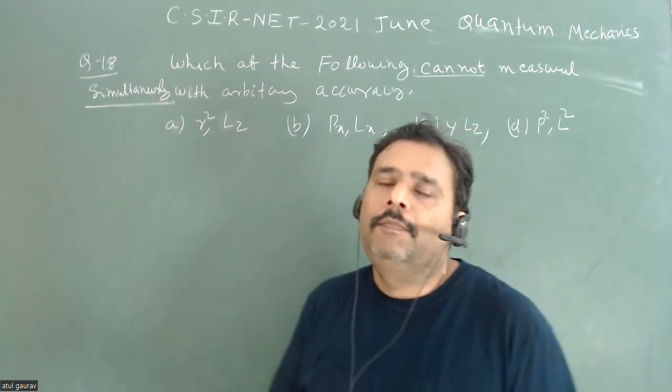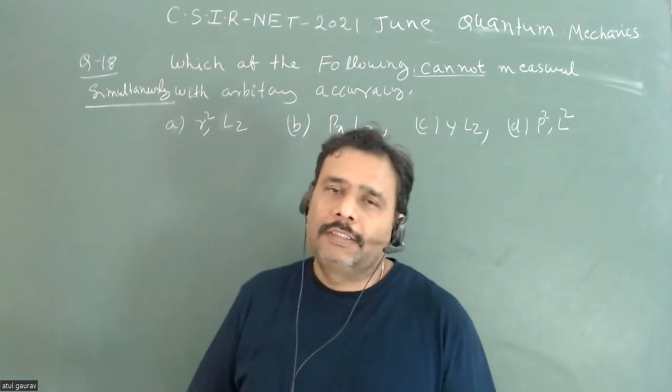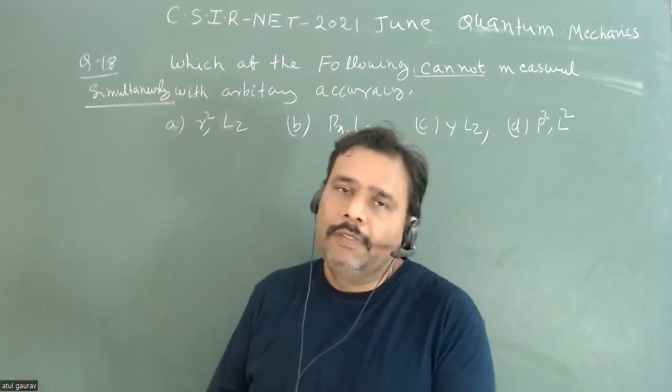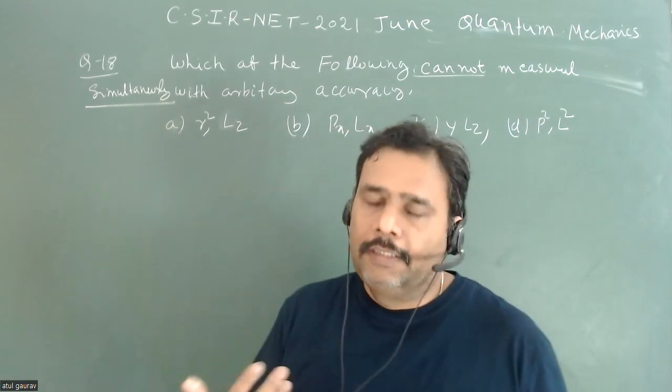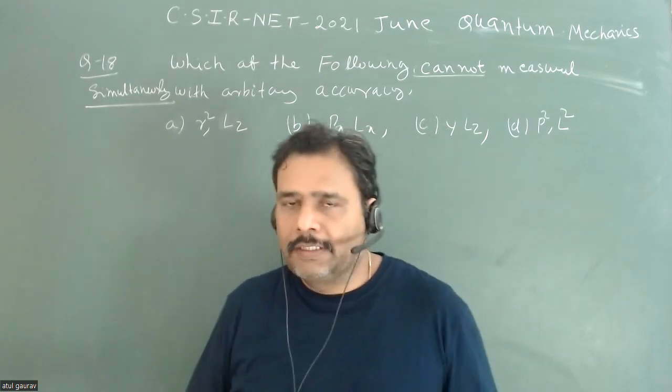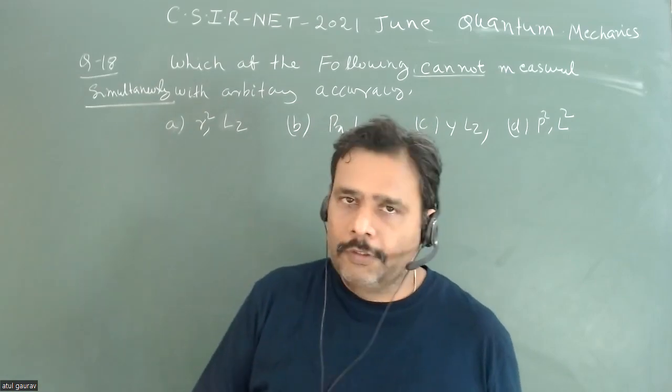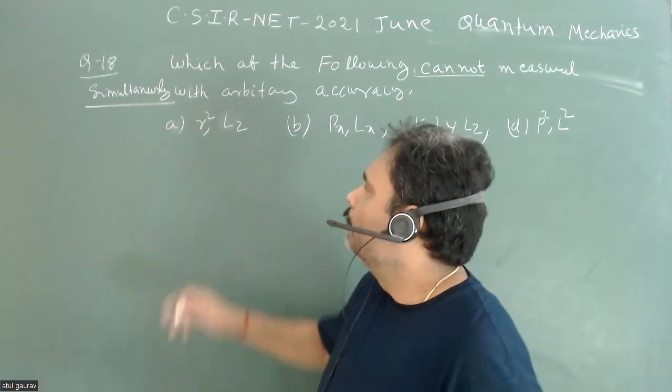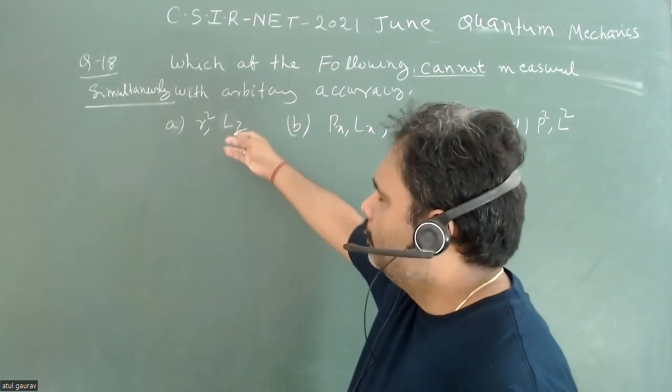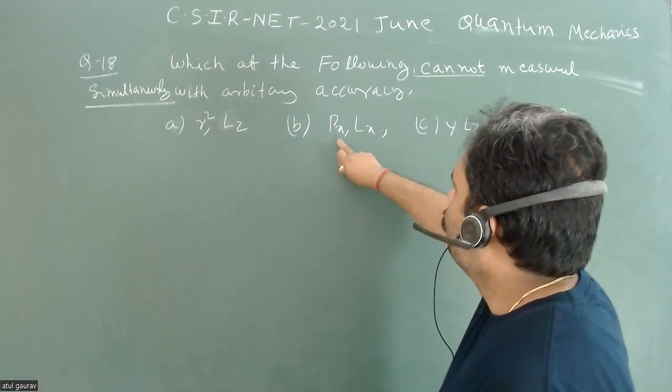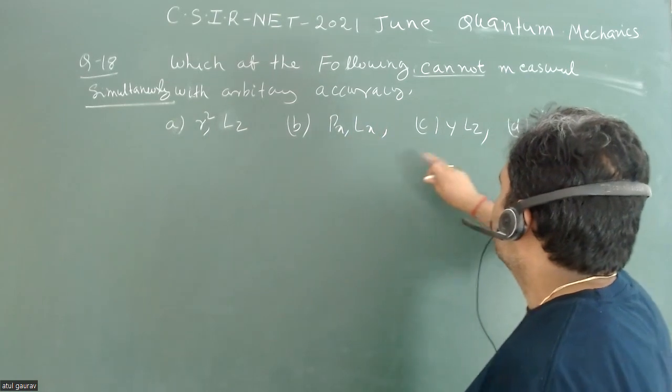Whenever you have two operators and need to check whether they are measured simultaneously or not, you have to check their commutation. When you check the commutation between r² and Lz you get zero, Px and Lx also gives zero.